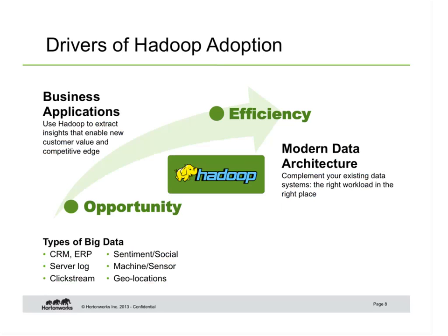We see two principal drivers for Hadoop. One is around opportunity — the opportunity to find and build new kinds of business applications, many off of these new types of data that organizations are looking to capture. These are often applications focused on a particular business unit. Driver number two is around efficiency — taking workloads and putting them in the most efficient infrastructure within your architecture. Like water, data needs to flow to the lowest place, and often that data should more appropriately flow into Hadoop as the right infrastructure. Opportunity and efficiency are the two big drivers.